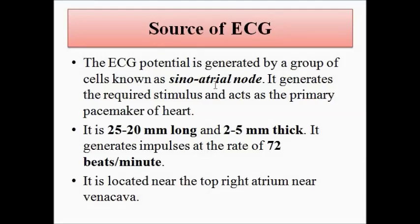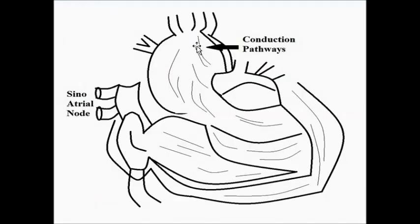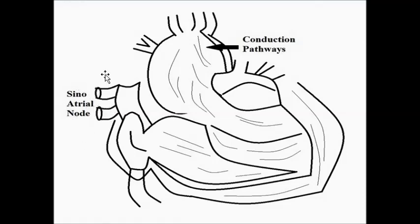From where does this signal — this electric potential change — originate? What is the source of the ECG? The electrocardiogram potential is generated by a group of cells in the heart called the sinoatrial node. Here at the top right of the heart, this group of cells is called the sinoatrial node, which acts as the source of the electric potential called ECG.